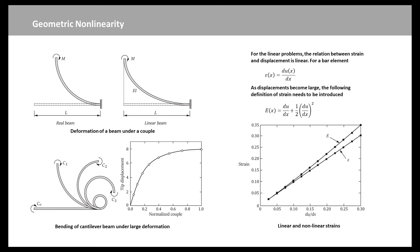For linearity problems, the relation between strain and displacement is linear. For example, in the case of a one-dimensional bar element, this relation can be written as epsilon equal to du over dx. This relation is valid when displacement and its gradient are infinitesimal. As these quantities become large, the linear relation is not accurate, and the following definition of strain needs to be introduced as epsilon equal to du over dx plus half of du over dx squared.